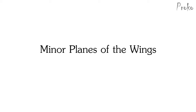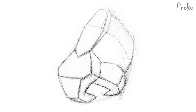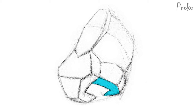The minor planes of the wings. The wings curl into the nostrils similar to the septum, so they each have a wide top plane and a thin side plane. The wings are not paper thin, so an indication of the front planes is crucial to give them some thickness.